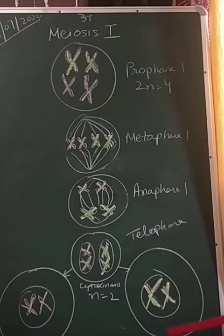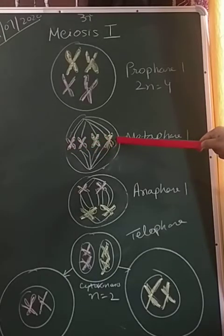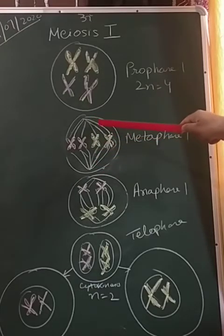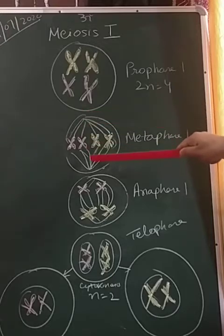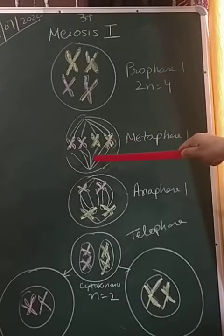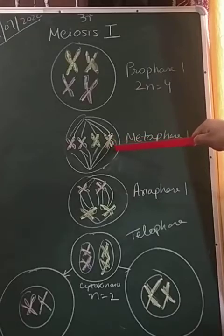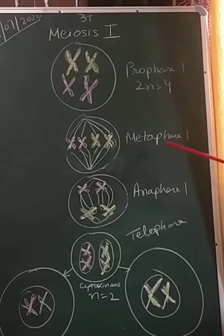In metaphase one, the bivalent chromosomes will align on the equatorial plate. Microtubules from the opposite poles — one from here and one from here — will form the spindle fibers, and they will attach to each pair of chromosomes. This is one pair and this is another pair. All the chromosomes will be arranged along the equatorial line.